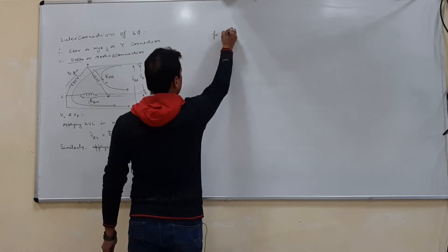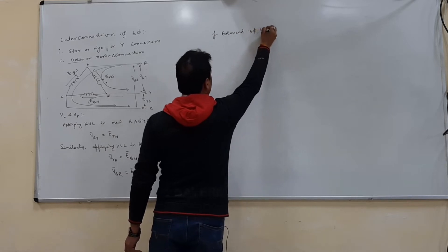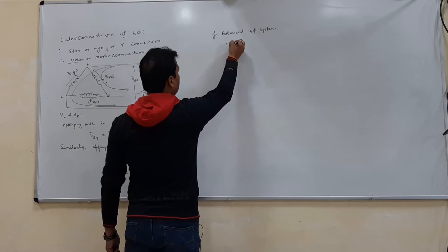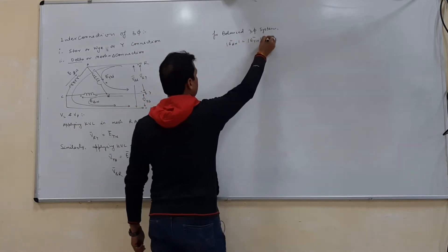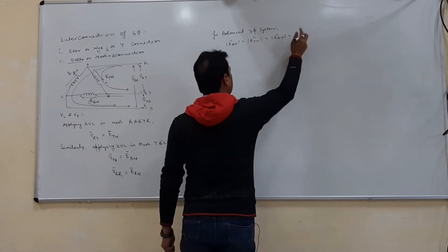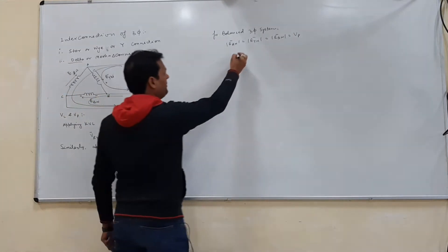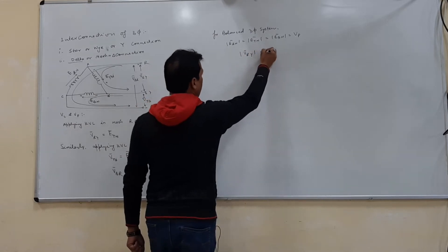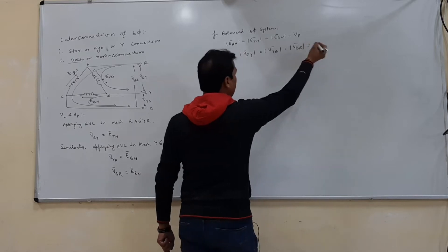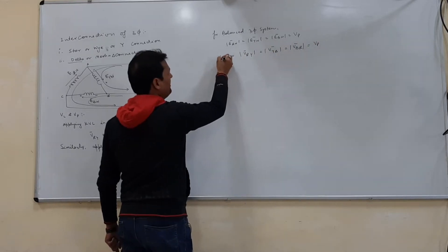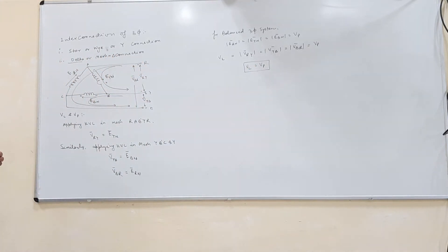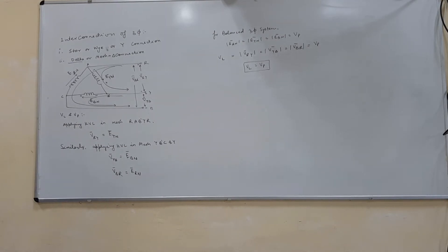For a balanced three-phase system, the magnitudes |ERN| = |EYN| = |EBN|, all equal to the phase voltage VP. It follows that |VRY| = |VYB| = |VBR|, all equal to VP, and collectively represented as VL. Therefore, VL equals VP in the case of a delta connected system.